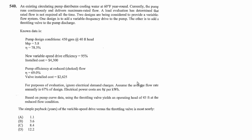An existing circulating pump distributes cooling water at 60 degrees year round. Currently, the pump runs continuously and delivers maximum rated flow. A load evaluation has determined that rated flow is not required all the time. Two designs are being considered to provide a variable flow system. One design is to add a variable frequency drive to the pump. The other is to add a throttling valve to the pump discharge.